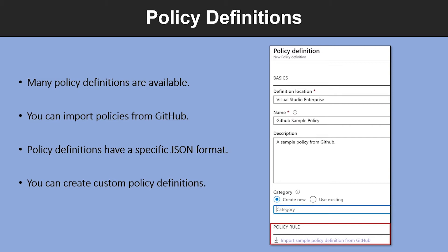Now let's understand what a policy definition is. A policy definition expresses what to evaluate and what action to take. For example, you could ensure all public websites are secured with HTTPS, or prevent a storage type from being created, or force a specific version of SQL server to be used. Let me show you how you can find a policy definition.